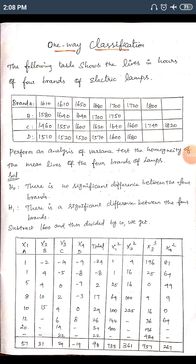Today we start unit number two on the classification problem. The given problem shows the lives in hours of four brands of electric lamps. We are asked to perform an analysis of variance test for the homogeneity of mean life of the four brands of lamp. Since we are asking for the variance row-wise only, this is a one-way classification problem.